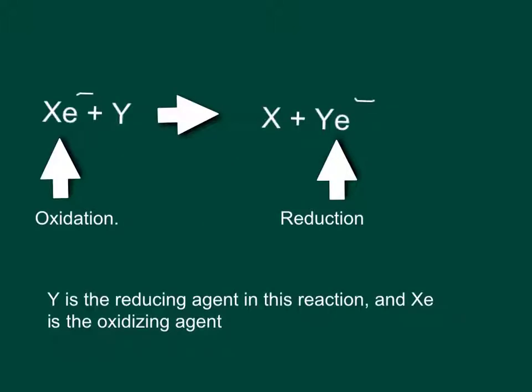Here is the formula for a redox reaction, and as you can see, X is oxidation and Y is reduction.